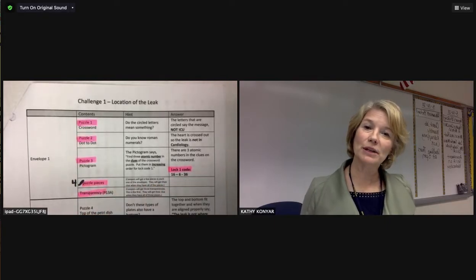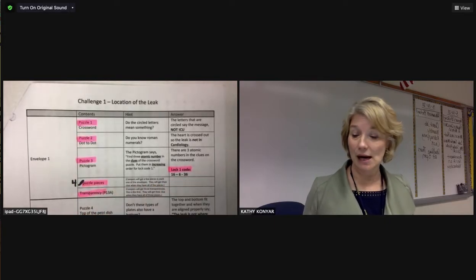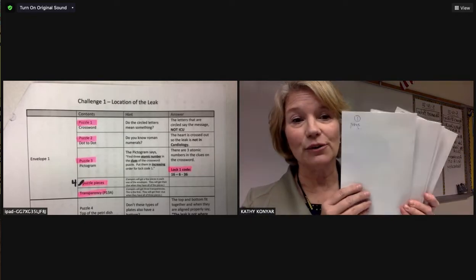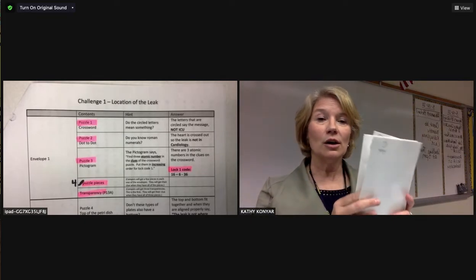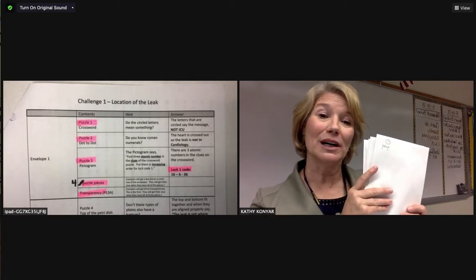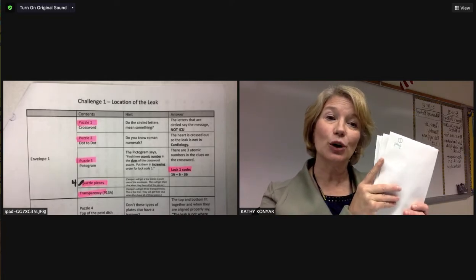I have highlighted all of the places where we will be adding an actual item. You should have a set of five envelopes, one set for each of your groups, so you should have 10 total sets.